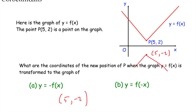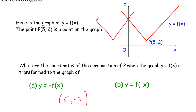For part b, the transformation is y equals f of minus x, which reflects the graph in the y-axis — you flip it horizontally. Points on the right-hand side move to the left-hand side. So the point was 5, 2 — five to the right and two up — it's now going to be 5 to the left and 2 up. So it moves to minus 5, 2.